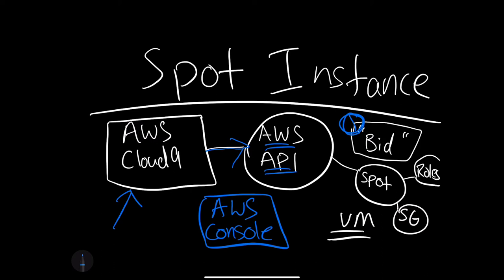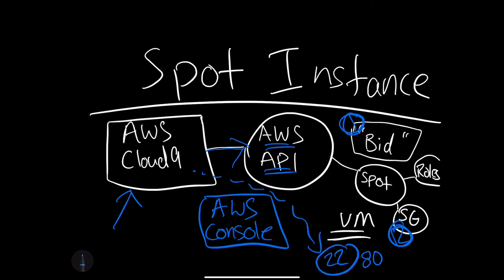Once you do that, there are only a couple of key things to take care of other than the size of the virtual machine. One of them is the security group — this determines what port you can talk to when you launch the machine. This could be port 80 if you were going to run a web service, or port 22 if you wanted to SSH in to control the machine, which is what we'll do in another video.